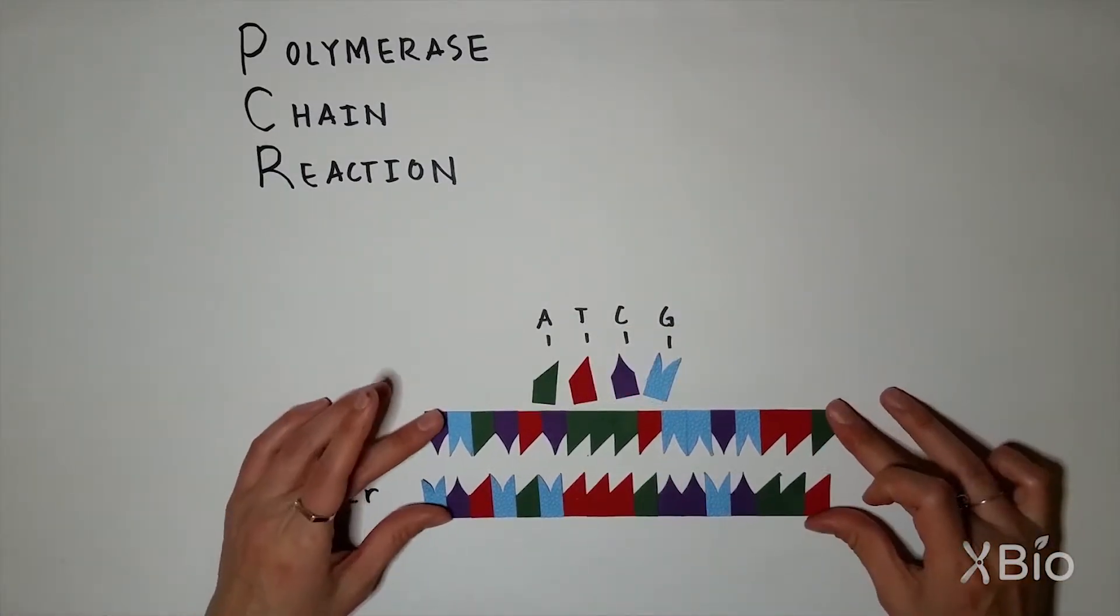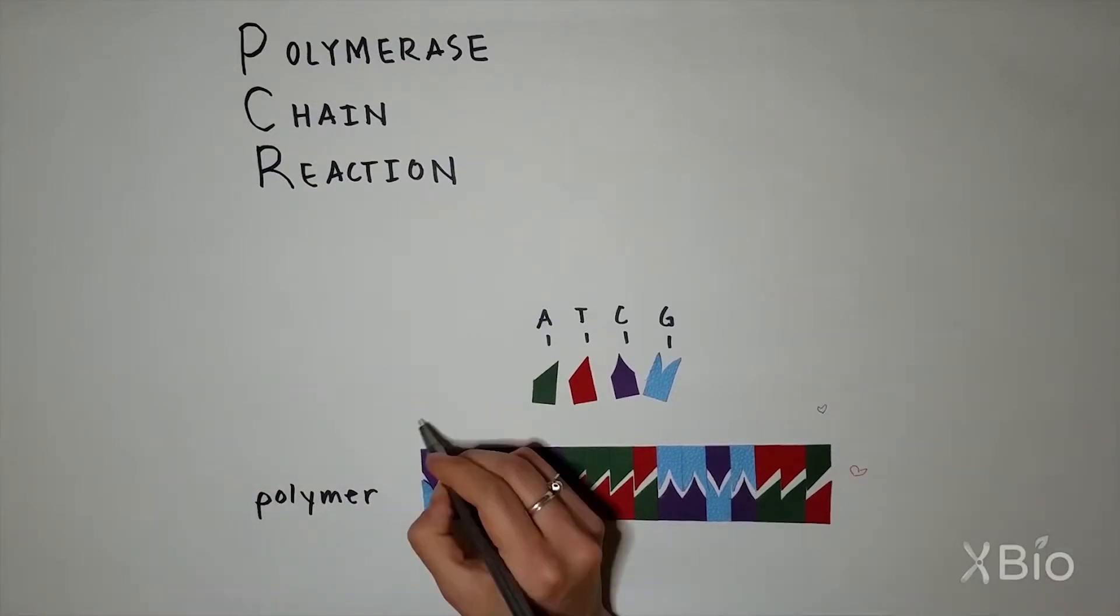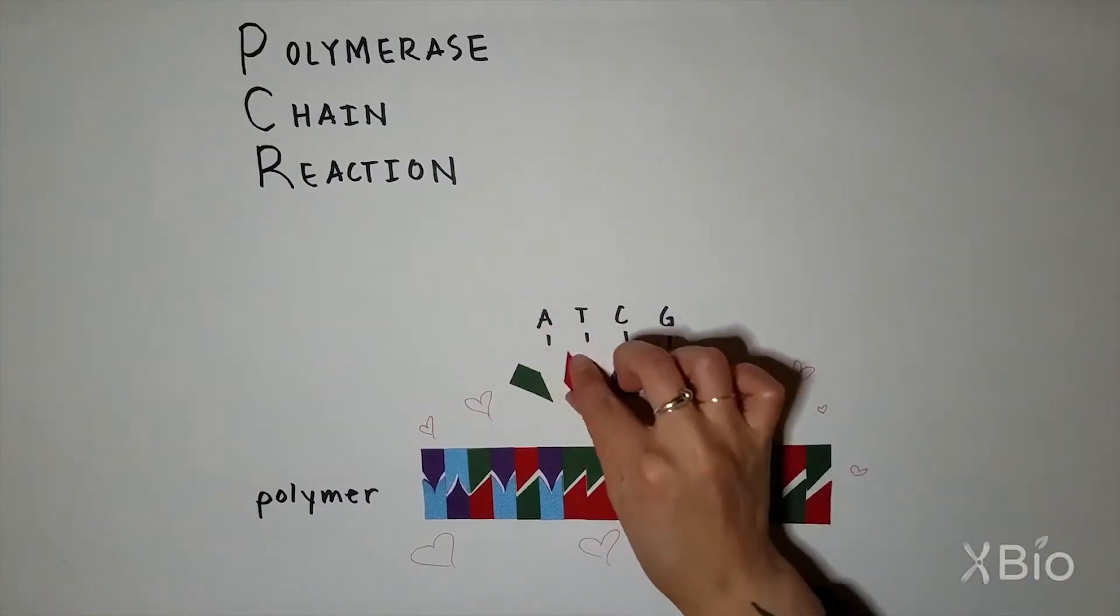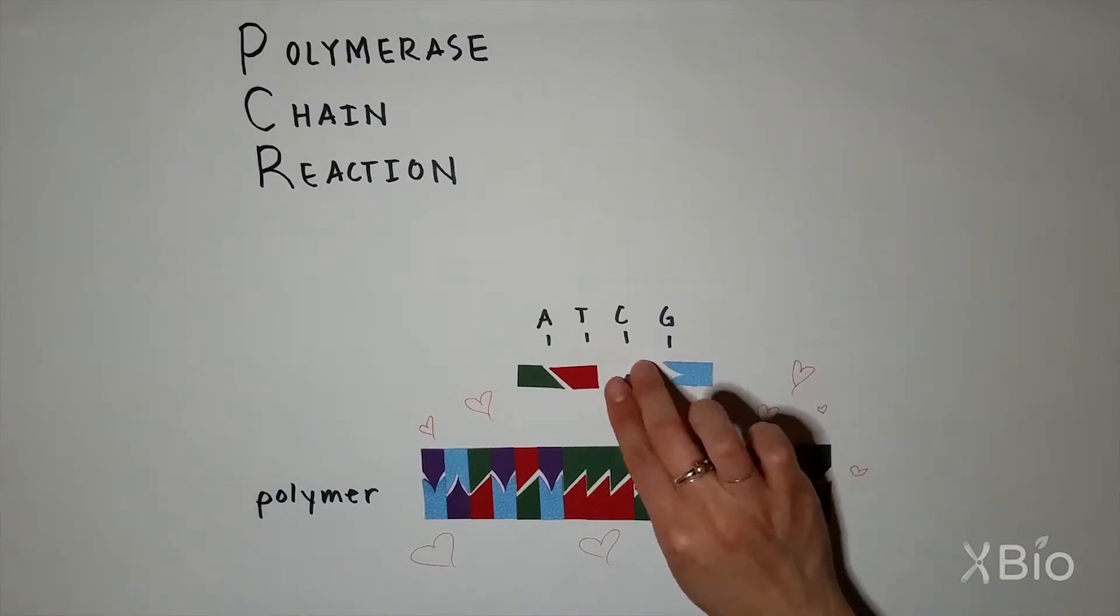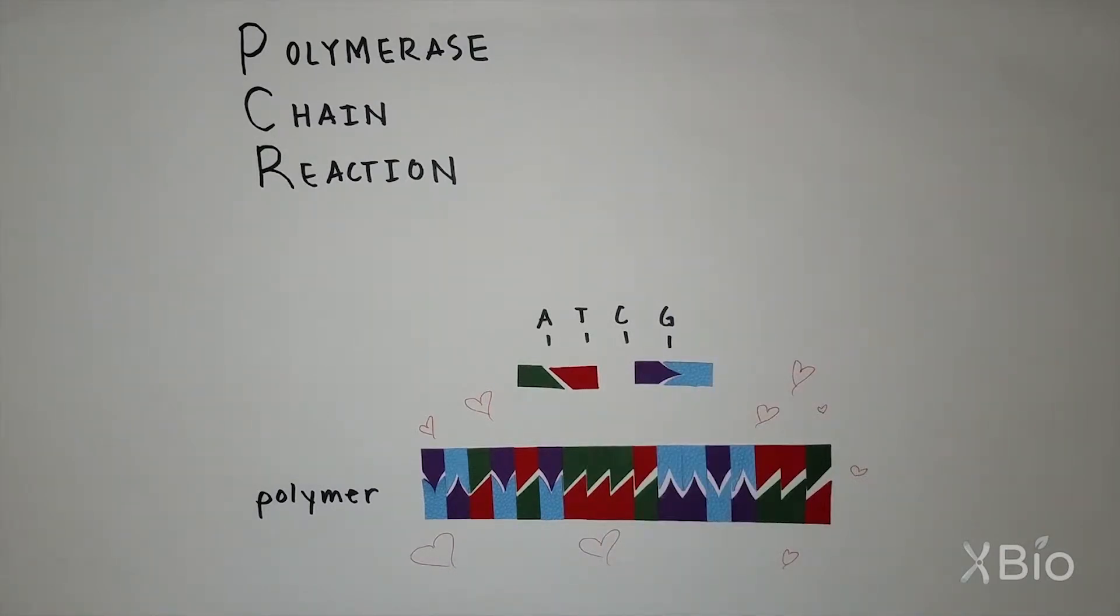DNA is double-stranded, which means it's not just one polymer, but two, and these strands are complementary. They complete each other. Specifically, A only connects to T, and C only connects to G, forming the DNA sequence.